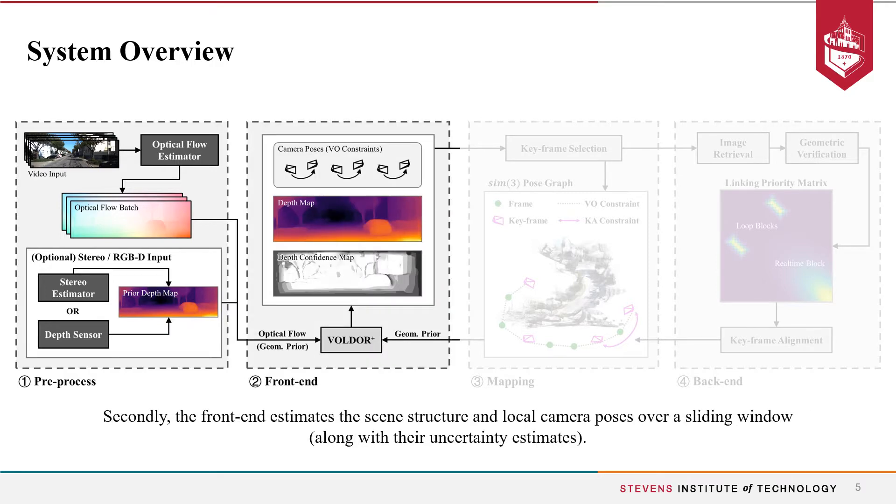Second is the front-end, which estimates the scene structure and local camera poses with their uncertainty estimates over a sliding window on the optical flow sequence. This is achieved based on an updated version of our earlier work VOLDOR, which we'll describe later.